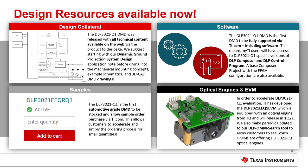Perhaps the most critical component of a DLP automotive subsystem is the optical engine, which focuses light from the illumination source — typically LEDs — onto the DMD and uses a projection lens to magnify the image produced by the DMD and focus the light at the projection surface. The optical engine is also one of the hardest components to design because it requires very specific optical design and manufacturing expertise. Without an optical engine, the DLP 3021-Q1 is almost impossible to fully evaluate.